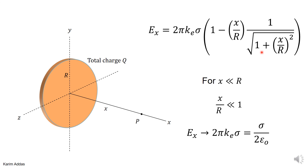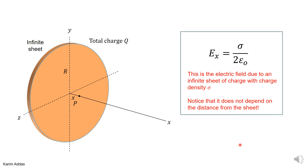With that term going to zero, you get zero over one which is zero, and the electric field in this limit becomes 2π k_e σ times one. Rewriting k_e as 1/(4πε₀) and canceling common factors, you get the result for the electric field due to an infinite sheet of charge with surface charge density sigma. Notably, the electric field doesn't depend on the distance from the sheet — whether you are close or far, the electric field value and direction remain the same.